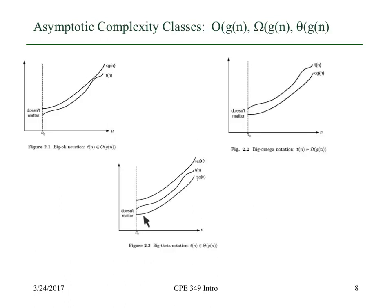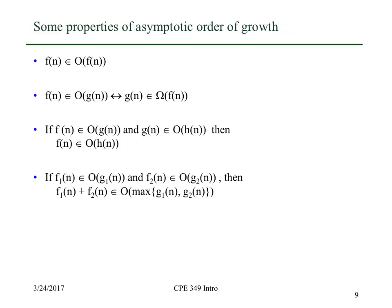Here are some important properties. F of n is a function in big O of f of n — f of n obviously grows at the same rate as itself, bounded above by some constant like 1.1 times f of n. If f of n is big O of g of n, then g of n is in big omega of f of n. Intuitively, if f of n doesn't grow any faster than g of n, then g of n doesn't grow any slower than f of n.